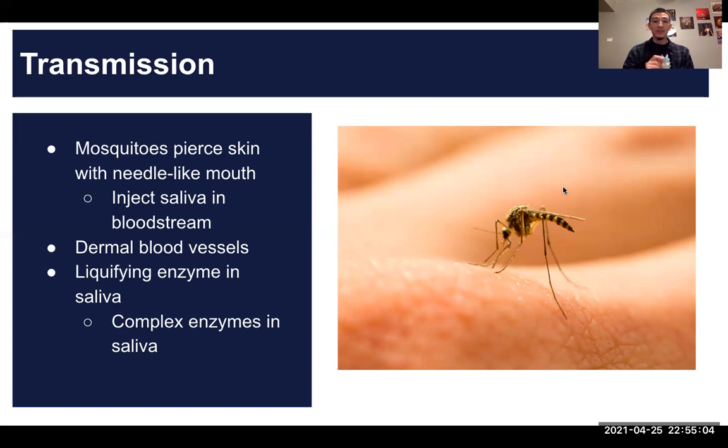So the proboscis, or the mosquito's mouth, needs to pierce the dermal layer of the skin, which it will have to navigate through to find a dermal blood vessel. In order for this process to work efficiently, the mosquito has a liquefying agent in their saliva to help loosen up the skin for easier navigation, so even more weird.